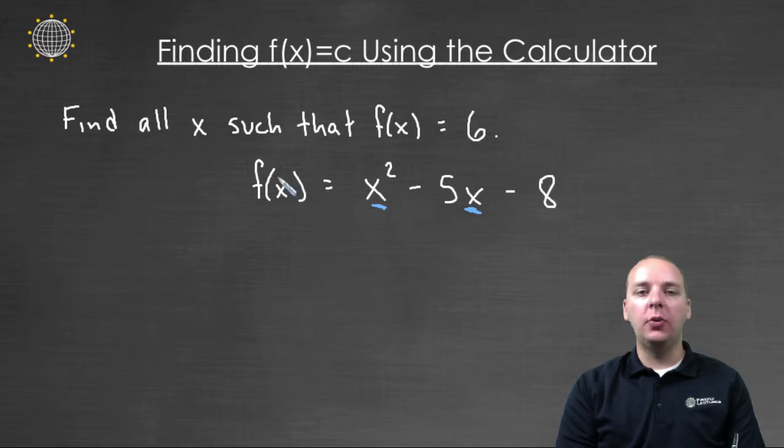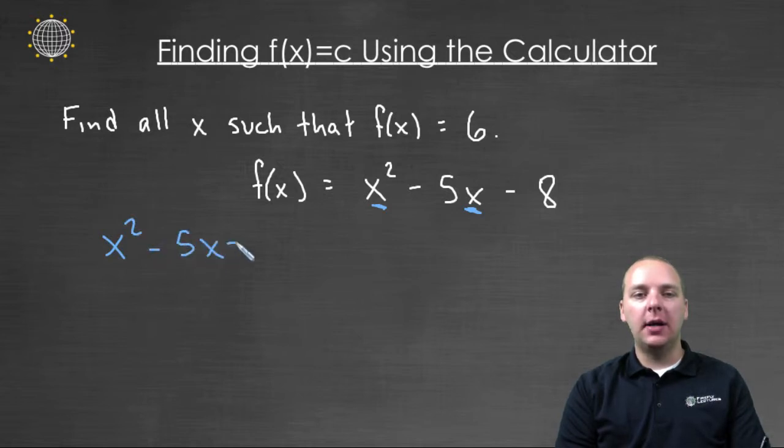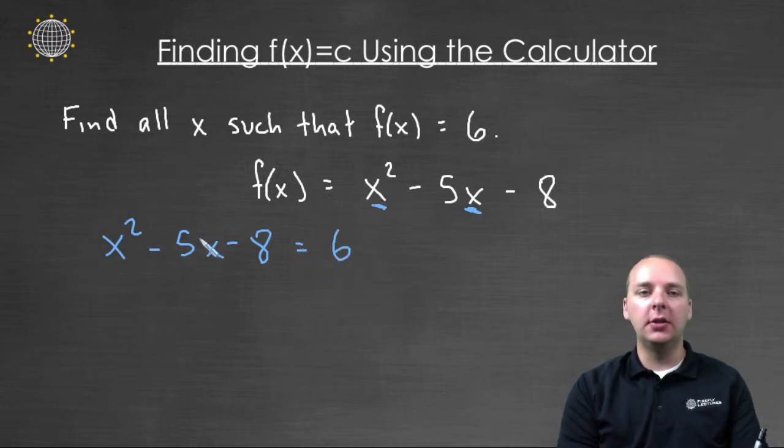So what we would do is we would take x² - 5x - 8 and set it equal to six because this is like asking a question: What x's make this equal six? And then off you go to solve it and you would get your answers. We would set the quadratic equal to zero and all those good things. But there's a neat way to solve this on the calculator. So let's look at how we would do this.